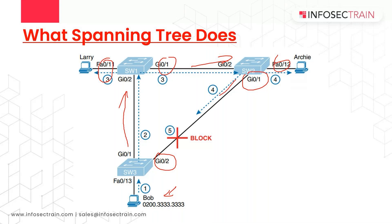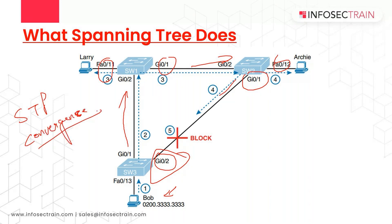The switches simply do not use the link between switch two and switch three for traffic in this VLAN — a minor negative side effect of STP. However, if either of the other two links fail, STP or RSTP converges so that switch three forwards instead of blocks on that interface. STP convergence refers to the process by which switches collectively realize something has changed in the LAN topology and determine whether they need to change which port blocks and which port forwards.